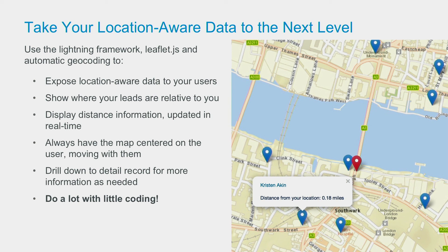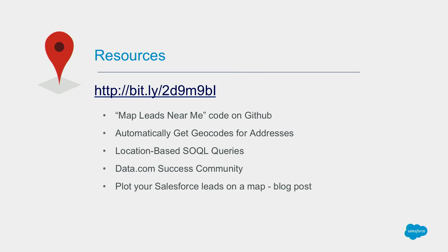To take your location-aware data to the next level: expose that data to users, show where leads are relative to you, display distance information and update it in real time, always keep the map centered on the user so as the salesperson moves around that central marker moves with them, and drill down into detail of each individual record as you travel around. Just a couple of resources — this link will take you to a GitHub repository on my account. All the links — the Lightning application code, how to automatically get geocodes for addresses, the queries, the data.com success community, and the blog post on how to plot your Salesforce leads on a map — are available on that GitHub repository.